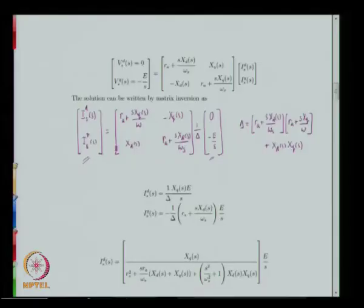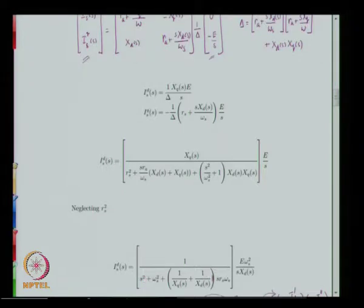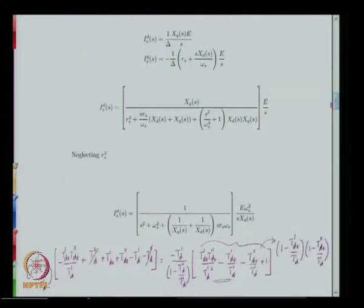Having written this equation, we obtained expressions for id and iq by simple inversion of the matrix equation. The resulting expression was analyzed, noting that stator resistance is very small. The stator resistance appears in the denominator through the determinant term Δ of the earlier expression. Resistance can therefore be neglected, and once simplified, we observe that the expressions contain 1/xd and 1/xq terms, with 1/xd also appearing outside the bracket.